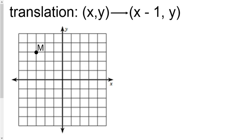Well, you know how to do translations when they flat out tell you how to do it, but how do you handle this arrow notation? They still want you to translate point M, but it looks a lot different.